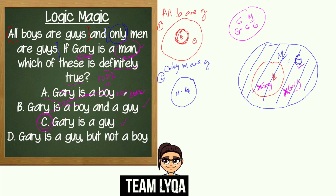Now, even if you see one that looks right, don't just skip — check the next one too. Letter D says 'Gary is a guy but not a boy.' Gary being a guy is 100% true, yes. But 'not a boy' — if you say you're 100% sure he's not a boy, that means it's impossible for him to be a boy. But the diagram shows it IS possible, just not certain. So Letter D is not 100% sure. The correct answer is Letter C.